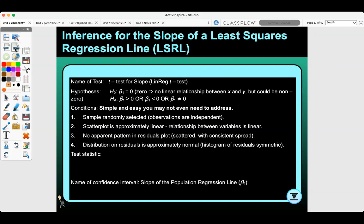The sample is randomly selected. Observations are independent. Scatter plot is approximately linear. Relationship between the variables is linear. No apparent pattern in the residuals plot. They're scattered with consistent spread. And distribution of residuals is approximately normal, or the histogram of residuals is symmetric.